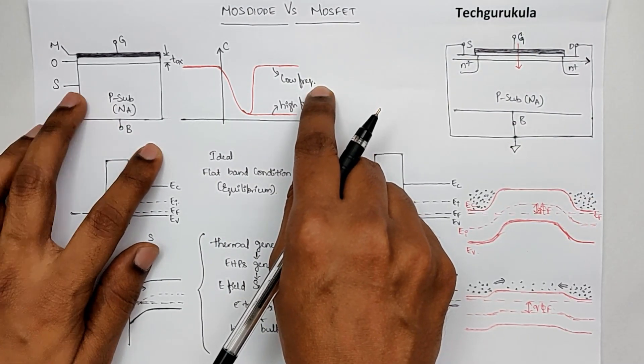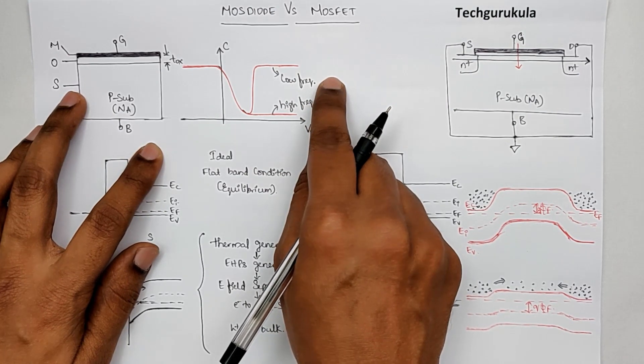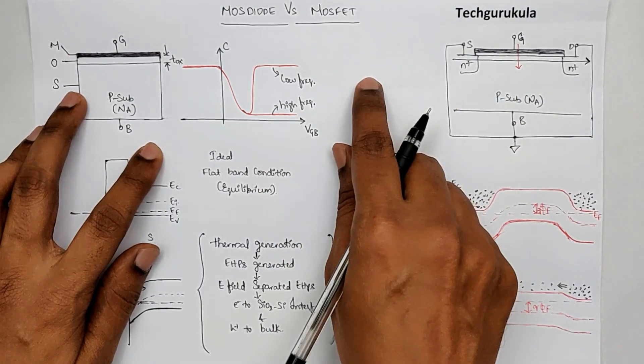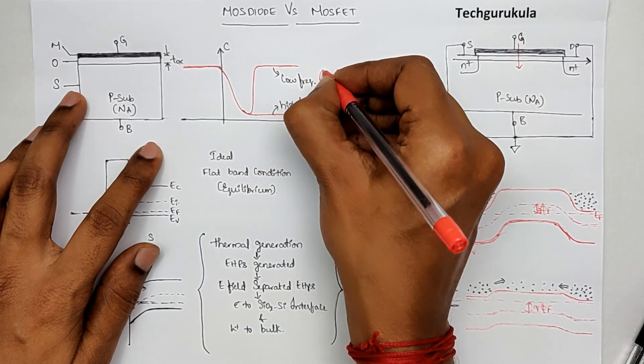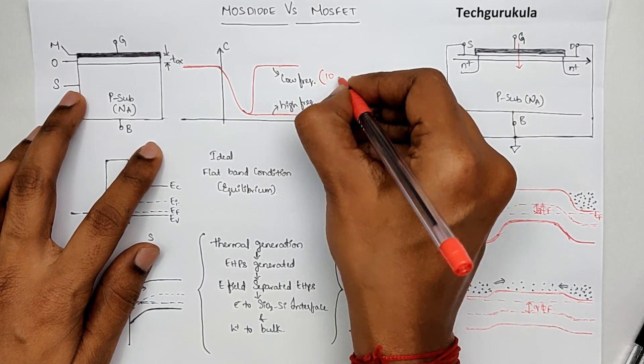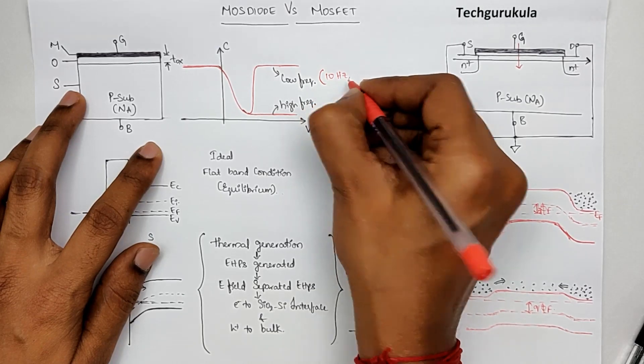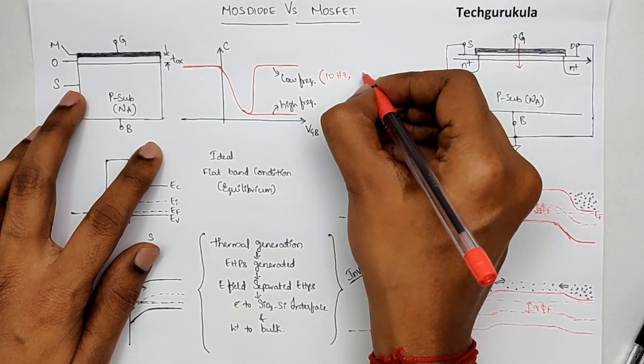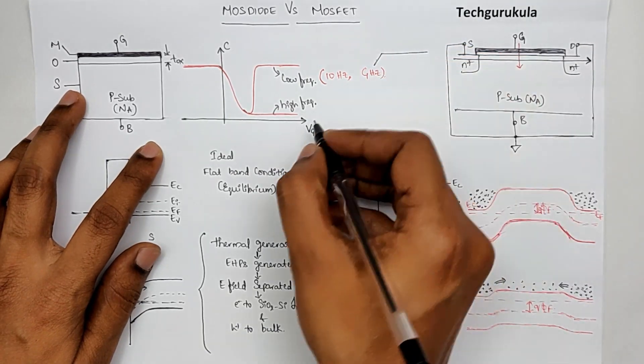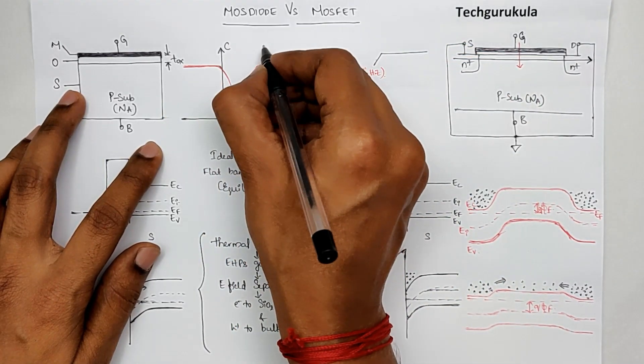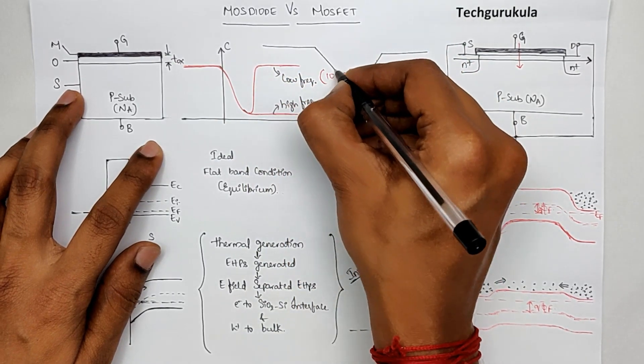frequency range for MOS capacitor was in 10 hertz, 20 hertz kind of, but in case of MOSFET, it would be in terms of gigahertz. So let me write this here. Low frequency would be in 10 hertz kind of, whereas in MOSFET, it would be in terms of gigahertz. This is for the MOSFET case and this is for the MOS diode case.